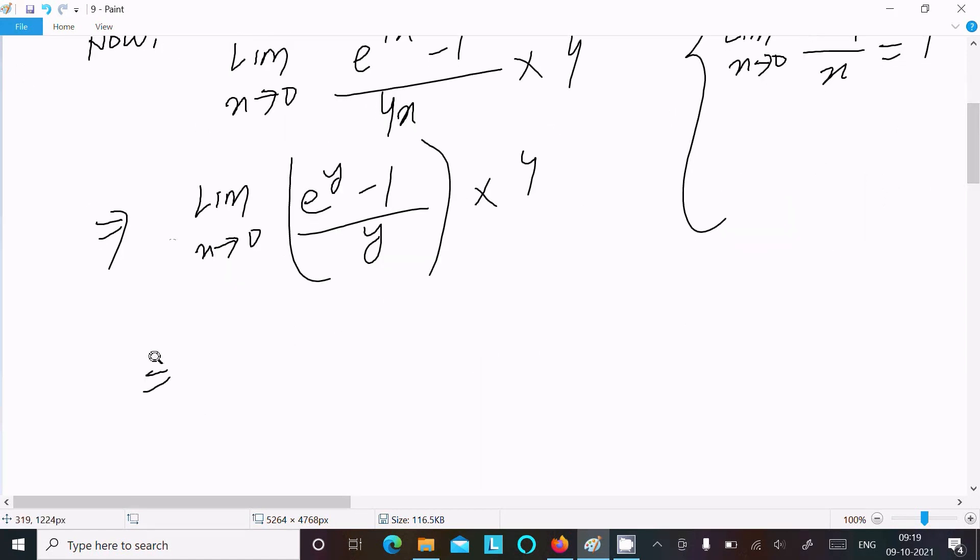So now here, this place we can write 1. 1 into 4, that is equal to 4. So 4 is the answer of this limit question.